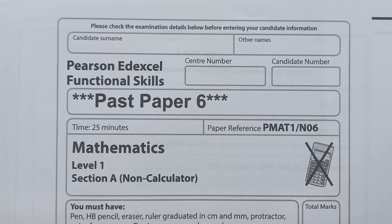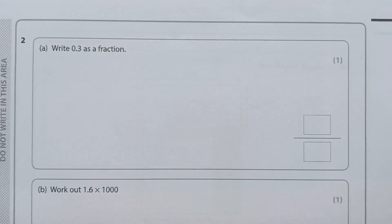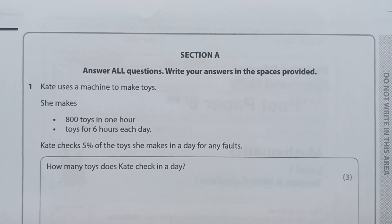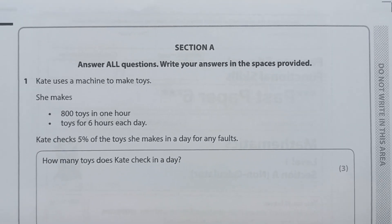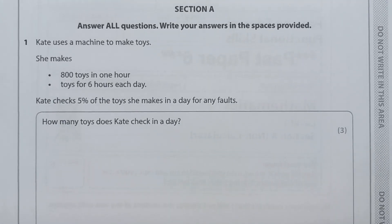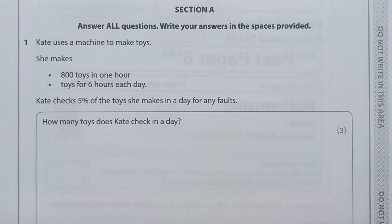Hi, this is Pearson Excel Functional Skills Maths Paper 6 for Level 1 and we're starting on the non-calculator section. Question 1: Kate uses a machine to make toys. She makes 800 toys in one hour, working for six hours each day. Kate checks 5% of the toys she makes in a day for any faults. How many toys does Kate check in a day?